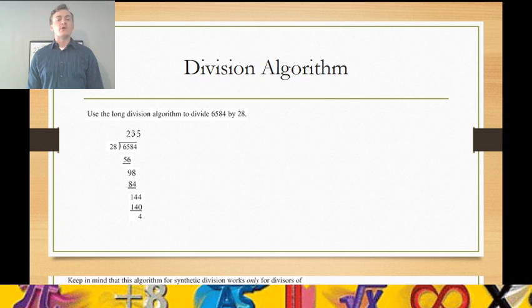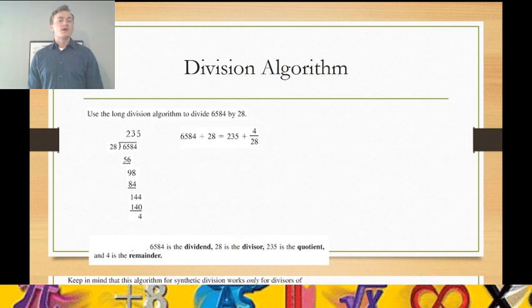6,584, if we divided that number by 28, we would get 235 groupings with 4 left over. How would we write that expression? That is 235 plus the remaining 4 left over out of our division of 28. So that remainder that we have left over is a part of a number, and it's our fraction. So 6,584 divided by 28 is 235 and 4/28.